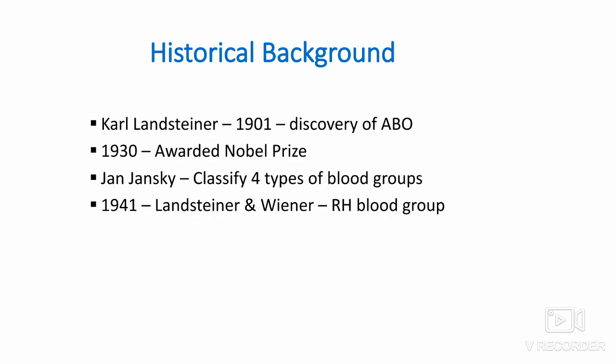Later, Jan Janský described and classified the four types of human blood groups. In 1941, Landsteiner and Wiener defined the RH blood group system. This continues with many types of blood groups being identified.